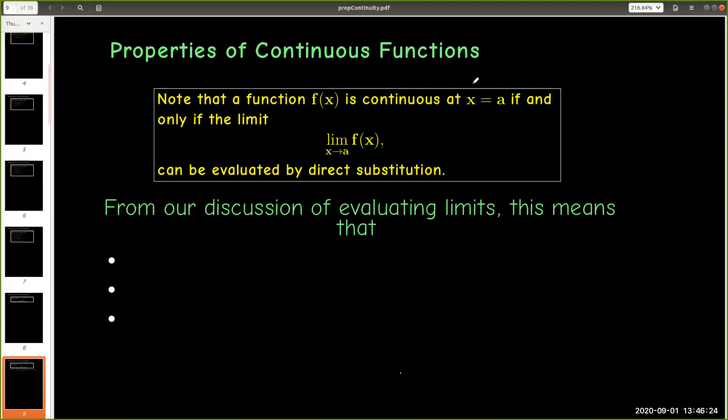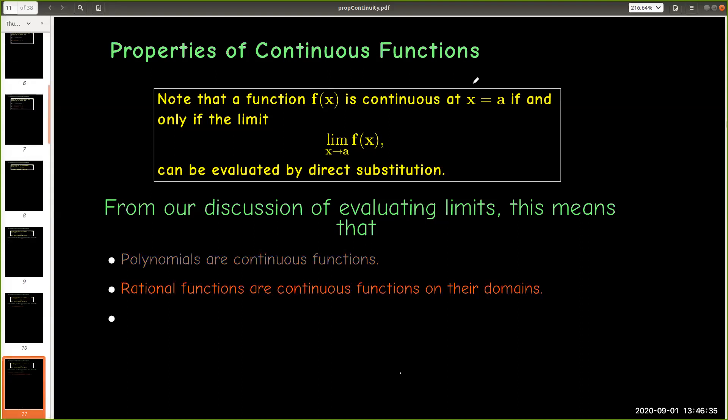So from what we've already learned when we discussed evaluating limits using direct substitution, polynomials must be continuous functions. Rational functions must be continuous functions on their domain. Remember, rational functions are functions which are fractions of polynomials. And also, radical functions are continuous functions on their domain.